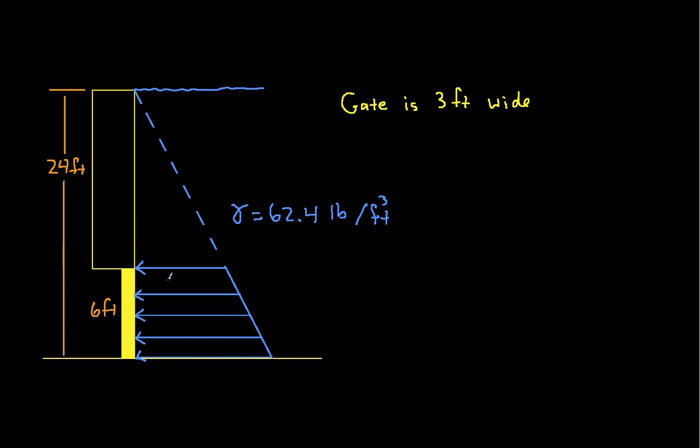What we want to do is we want to find the force on the gate due to the water. We want actually an equivalent force. So we want to find the magnitude of the force, which would be F, and we want to find the position where that force would be applied. We'll call that H-bar.